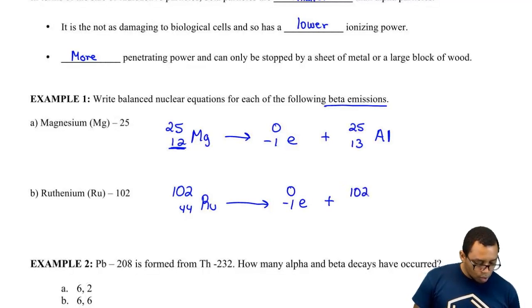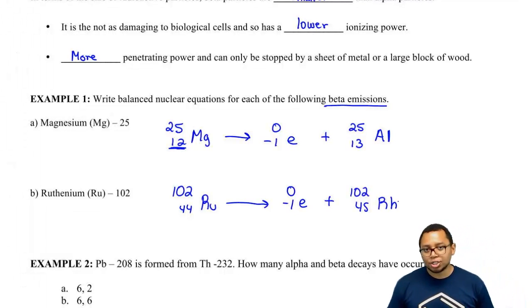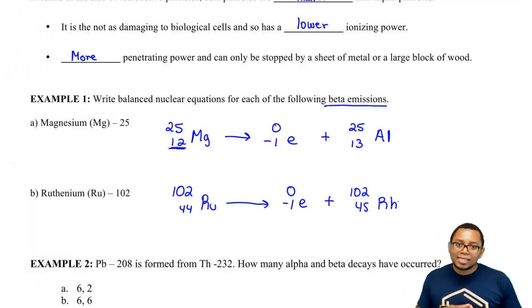So this number stays 102. And this number here would have to be 45. So it goes up to Rh. So those would be examples of beta decays or beta emissions.